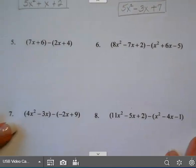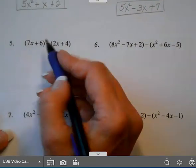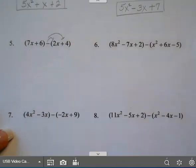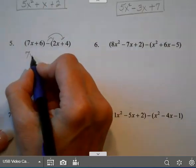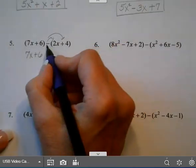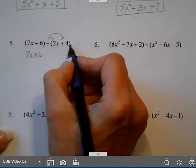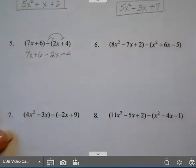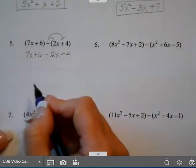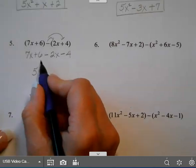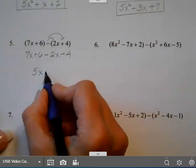We're going to move on to subtraction. When you have subtraction you have to distribute that to everything in the next set of parentheses after that subtraction sign. The first one will stay the same — you can drop the parentheses. But I have to subtract everything in the second set of parentheses, so I get minus 2x, then minus 4. Collecting your like terms: 7x minus 2x gives you 5x, and 6 minus 4 is positive 2.